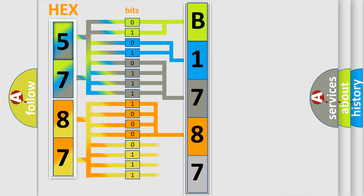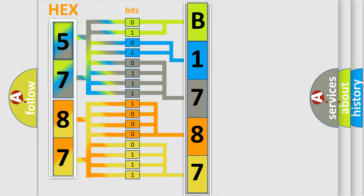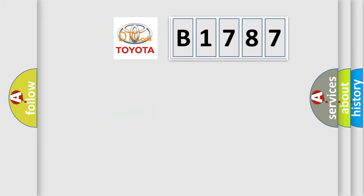A single byte conceals 256 possible combinations. We now know in what way the diagnostic tool translates the received information into a more comprehensible format. The number itself does not make sense to us if we cannot assign information about what it actually expresses.